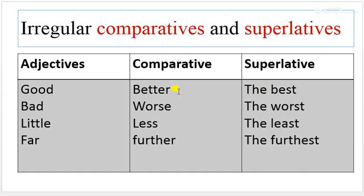For example, good, better, the best. Bad, worse, the worst. Little, less, the least. Far, further, the furthest.